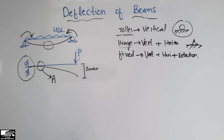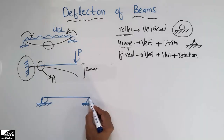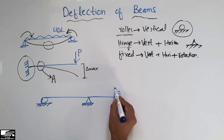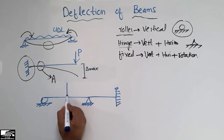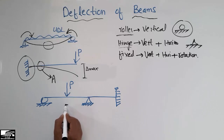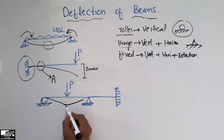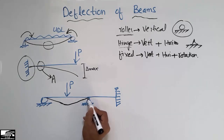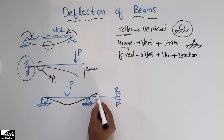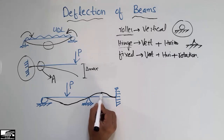Now let's consider a more complex beam with a roller support, a hinge support, and a fixed support at the end, with a point load acting at one point. The maximum deflection will be at the load point. I bring the curve down to the hinge support — no deflection there — and then due to the load, it moves up, and at the fixed support there is no rotation, so it ends horizontally.